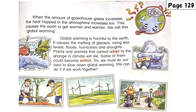Global warming is harmful to the earth. It causes the melting of glaciers, rising sea levels, floods, hurricanes, and droughts. Plants and animals that cannot adapt to the change in climate will die, and some could become extinct. So we must do our best to slow down global warming — we can do it if we work together.